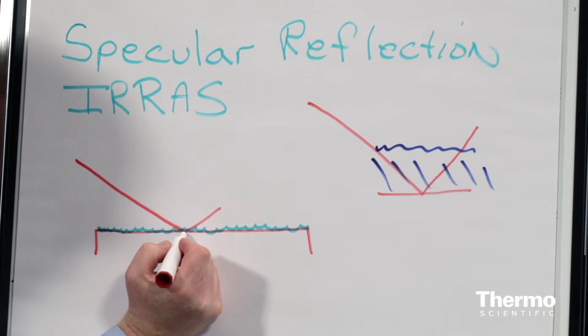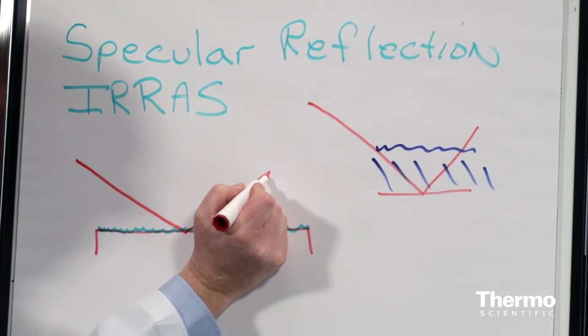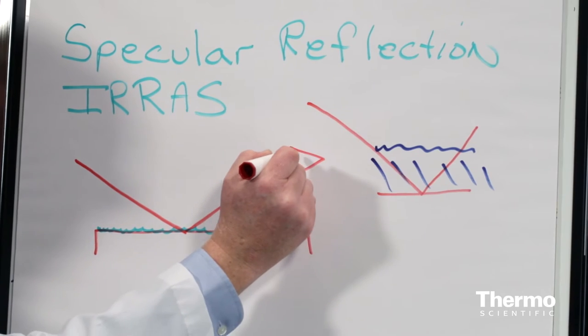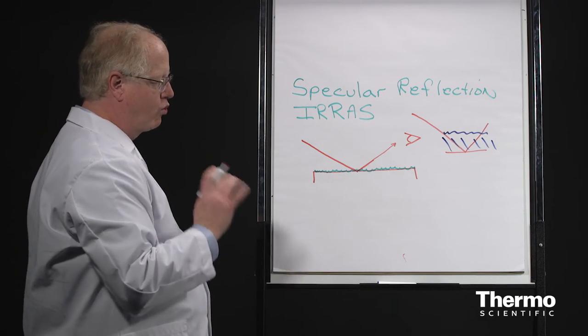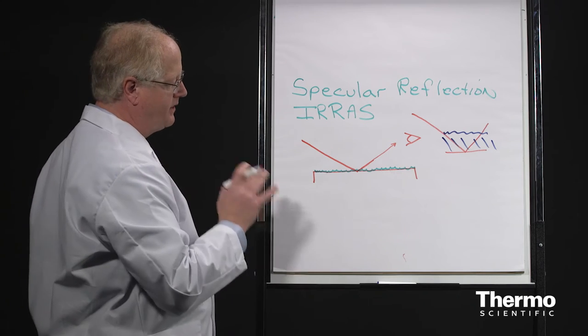And then that beam, since it's specularly reflected, just goes right on through our optics to our detector, and we pick it up. This is great for thin films, as I said, that are on the surface. One of the variables that you can introduce into this is the angle at which you pass through the sample.